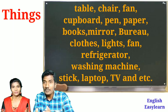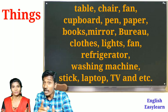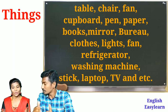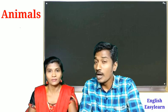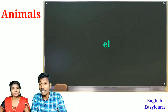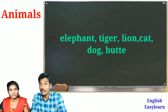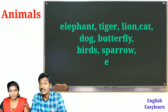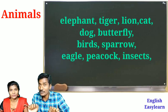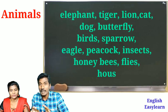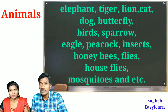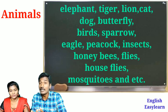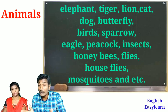Also stick, laptop, TV — everything comes under things. Next, animals: elephant, tiger, lion, cat, dog, butterfly, birds like sparrow, eagle, peacock, insects like honeybees, flies, house flies, mosquitoes — everything comes under animals.